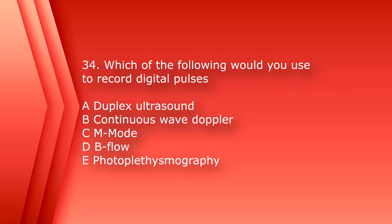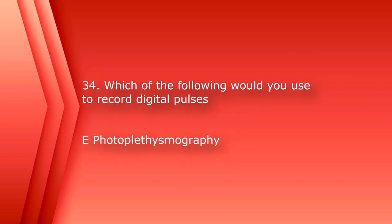Number 34: which of the following would you use to record digital pulses? A. Duplex ultrasound, B. Continuous wave Doppler, C. M-Mode, D. B-Flow, or E. Photoplethysmography. The answer is E, Photoplethysmography, or PPG.